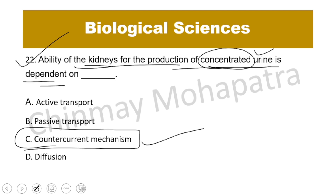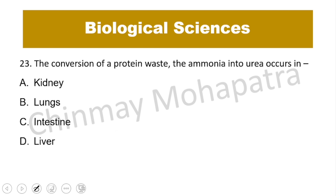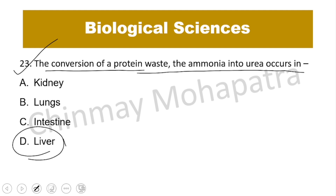Question number 23: The conversion of protein waste ammonia into urea occurs via the urea cycle, also called the ornithine cycle. The right answer is the liver — this conversion happens in the liver.